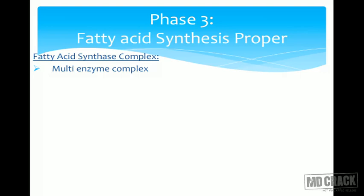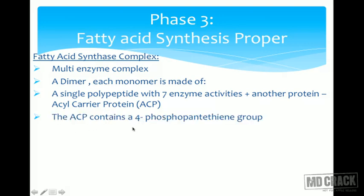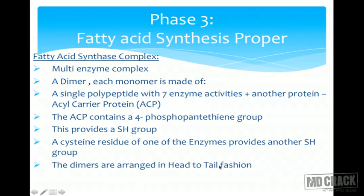Each fatty acid synthase monomer is a single polypeptide chain, but two together form the active dimer. Each monomer has seven enzyme activities — a single polypeptide forming domains responsible for different catalytic activities. There is also an acyl carrier protein (ACP), which contains a 4-phosphopantetheine group. This provides an -SH (sulfhydryl) group; a cysteine residue of one of the enzymes provides another sulfhydryl group. The dimers are arranged in a head-to-tail fashion.